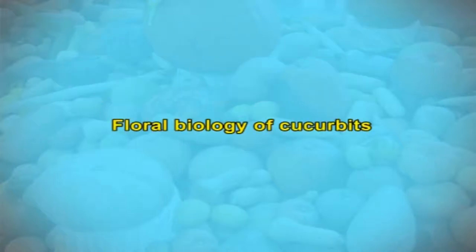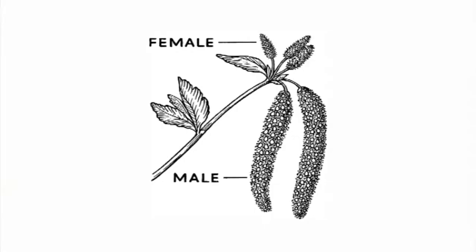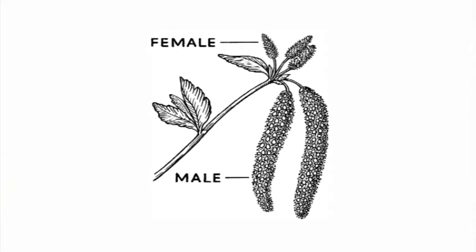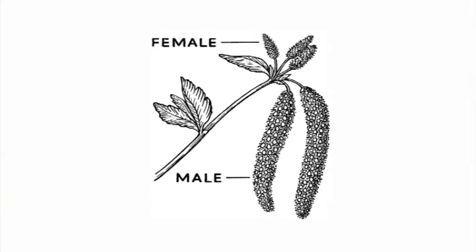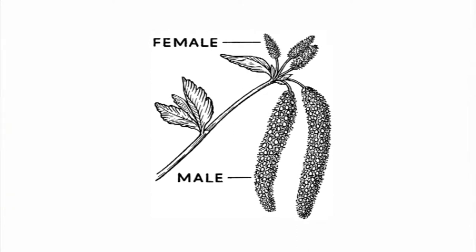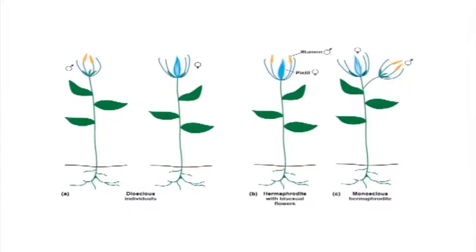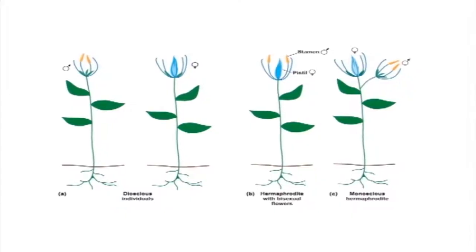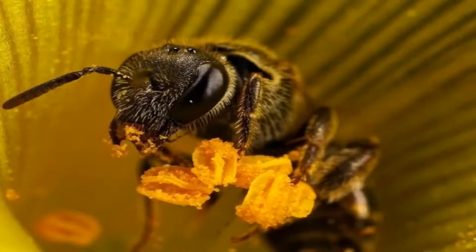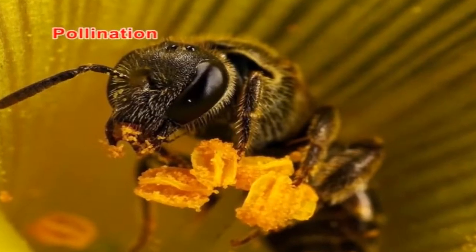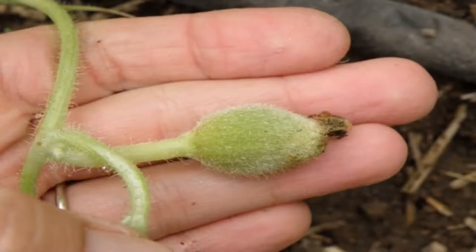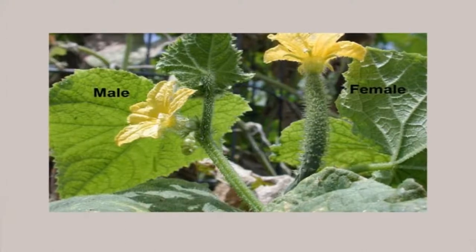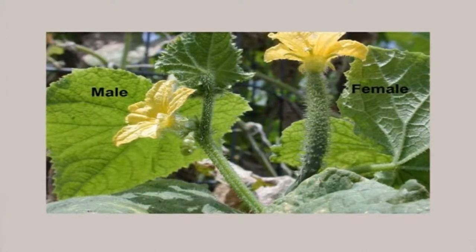Now let us see the floral biology of some cucurbits. Most of the cucurbits are monoecious in nature, meaning the male and female flowers are different but borne on the same plant. A few cucurbits are dioecious, and a number of hermaphrodite and andromonoecious cultivars are also available in some crops.